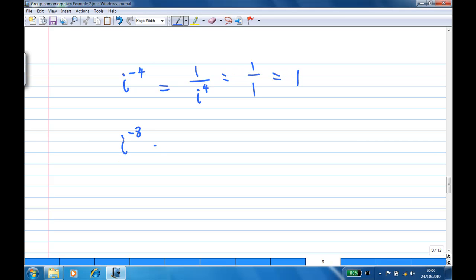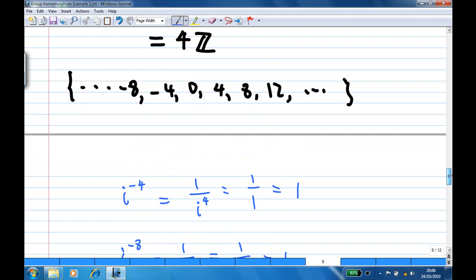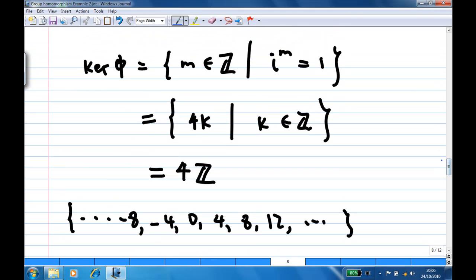i^(-8) = 1 over i^8 = 1 over 1, which is also 1. That is why the kernel is actually equal to 4Z, so it includes all the negative and positive integers which are multiples of 4.